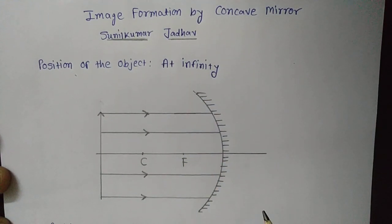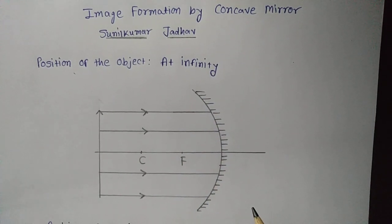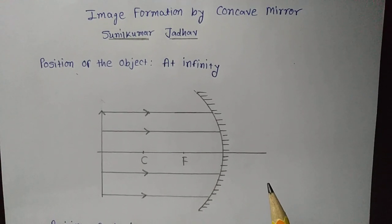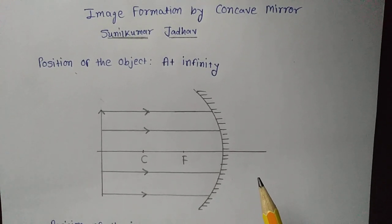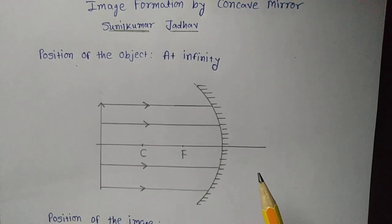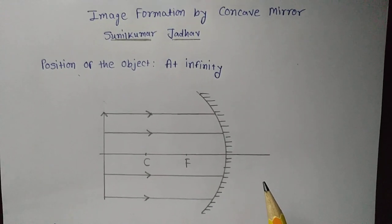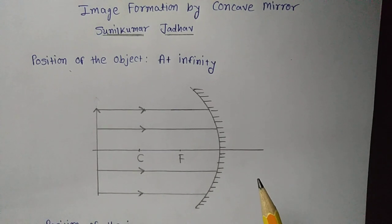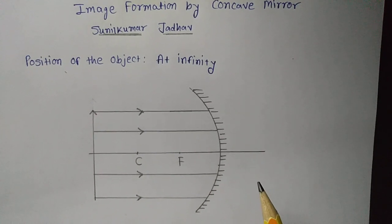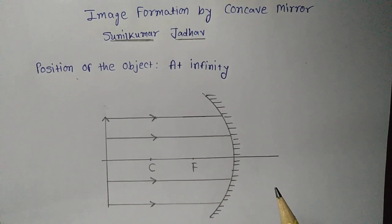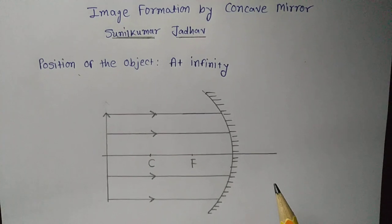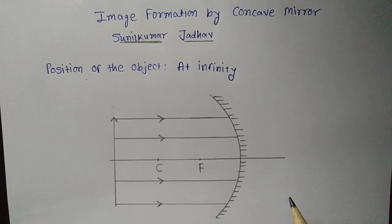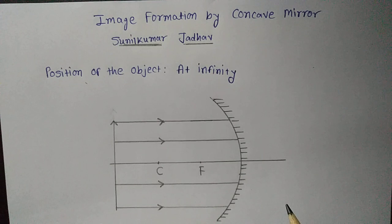We saw how an image forms if the ray parallel to the principal axis, after reflection, passes through principal focus F. What is principal focus F we saw in the earlier video. If a ray is passing through F and then incident, it becomes parallel to the principal axis. Also, if it is passing through the center of curvature and then incident, it reflects back on the same path.